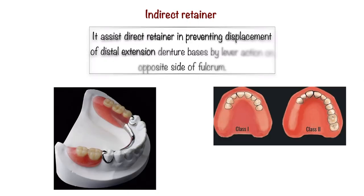Next comes the indirect retainer. The indirect retainer is a part of the RPD which assists the direct retainer in preventing the displacement of distal extension bases. As you can see in the picture, Kennedy's class 1 and Kennedy's class 2 distal extension denture bases are shown. The indirect retainer usually takes the form of a rest and is placed on the opposite side of the fulcrum line. The fulcrum line is an imaginary line around which the RPD tends to rotate, and to prevent this rotational displacement, indirect retainers are placed.